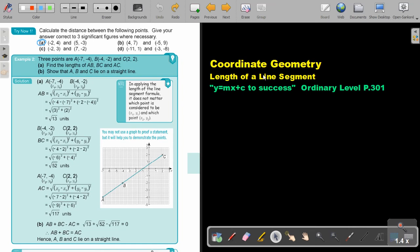Coordinate Geometry. We are going to continue with the length of a line segment. You will find this on page 301 in the Namibia Ordinary Level Mathematics Textbook, Y equals MX plus C to success.